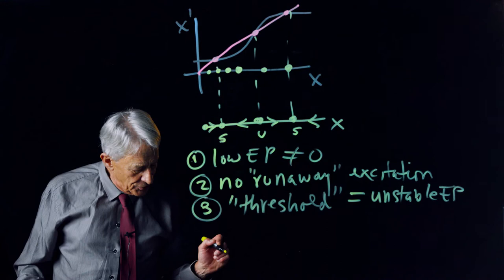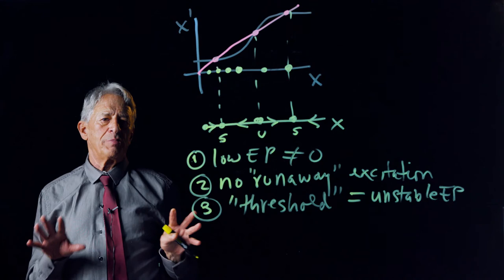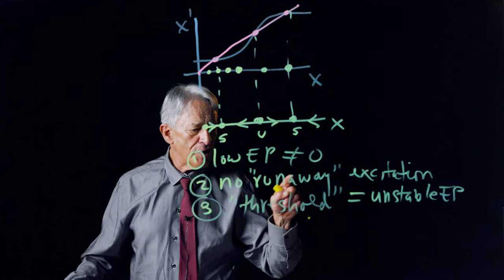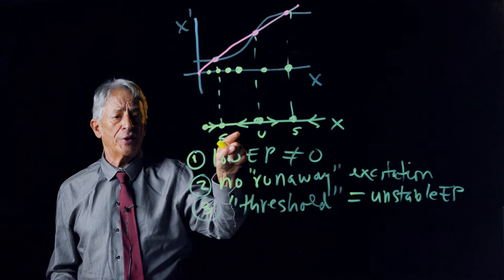So notice, that we have defined two critical biological words. The word switch, which is stable, unstable, stable. And the word threshold, which is defined as the unstable equilibrium point between the two stable ones.